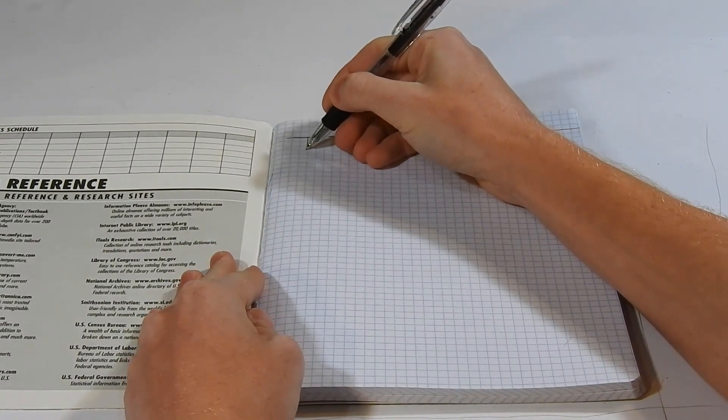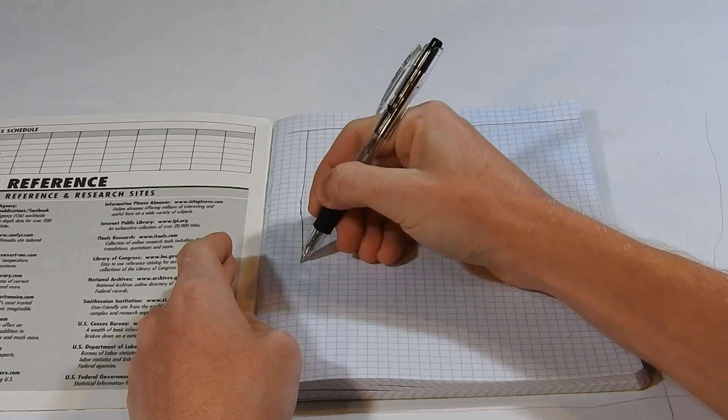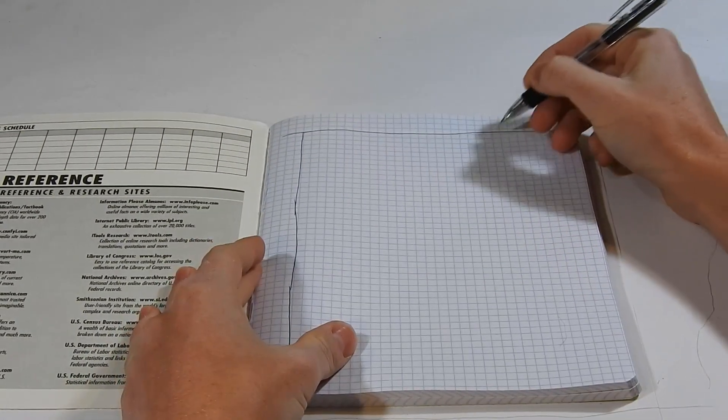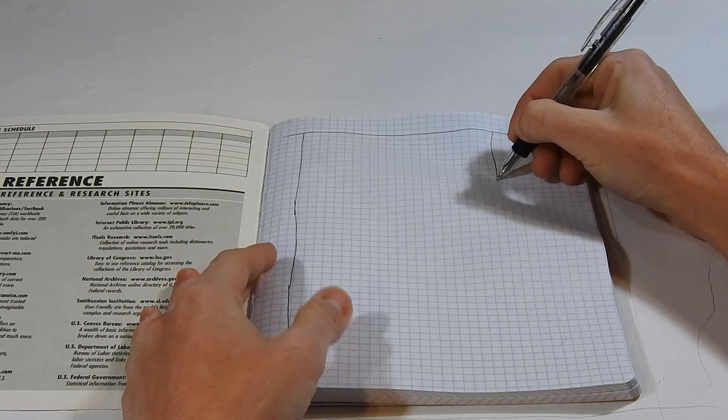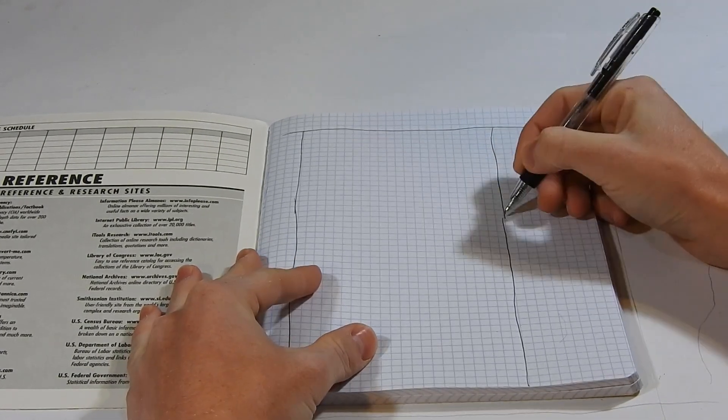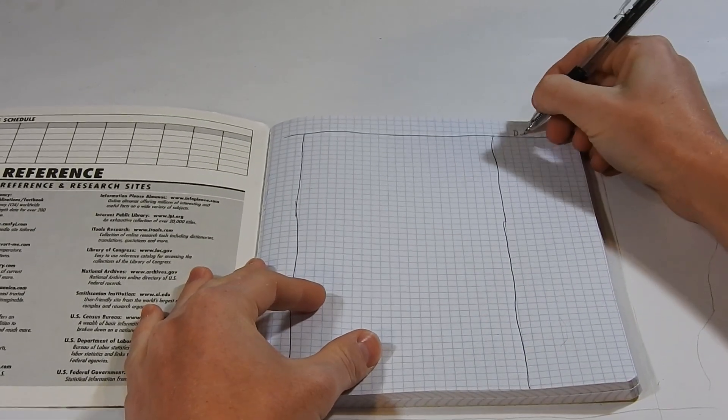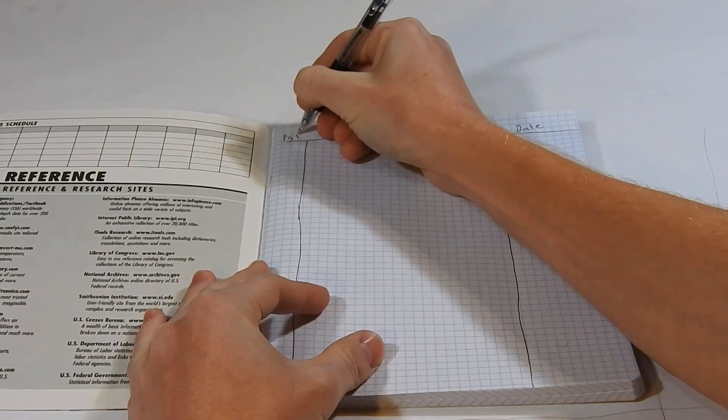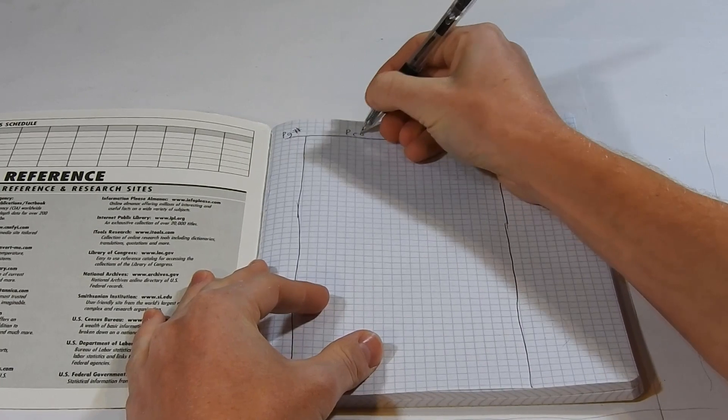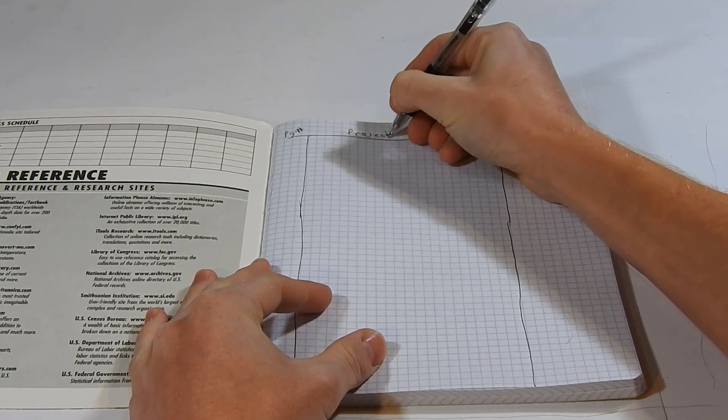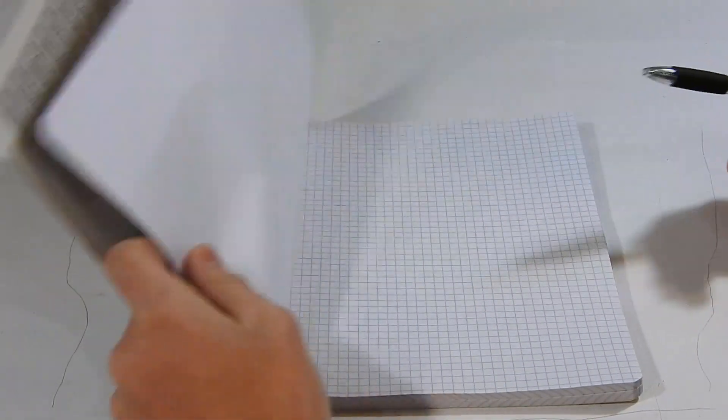And you're going to need three columns. The first one being for the page number, the next column being larger for the project title, and the last column being what's left for the date. Date, page number, and project. And do that for the next few pages.